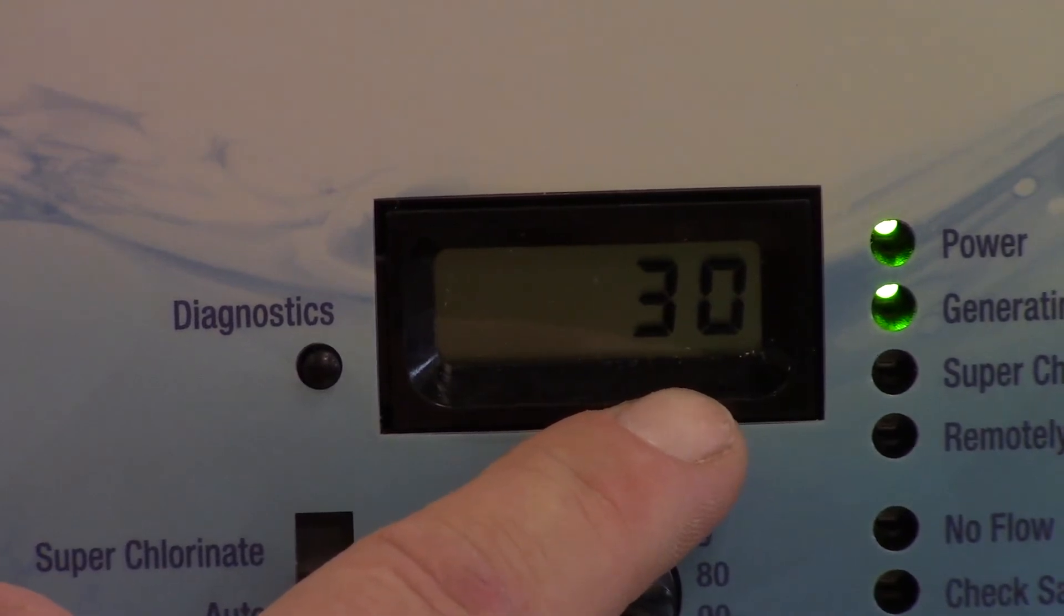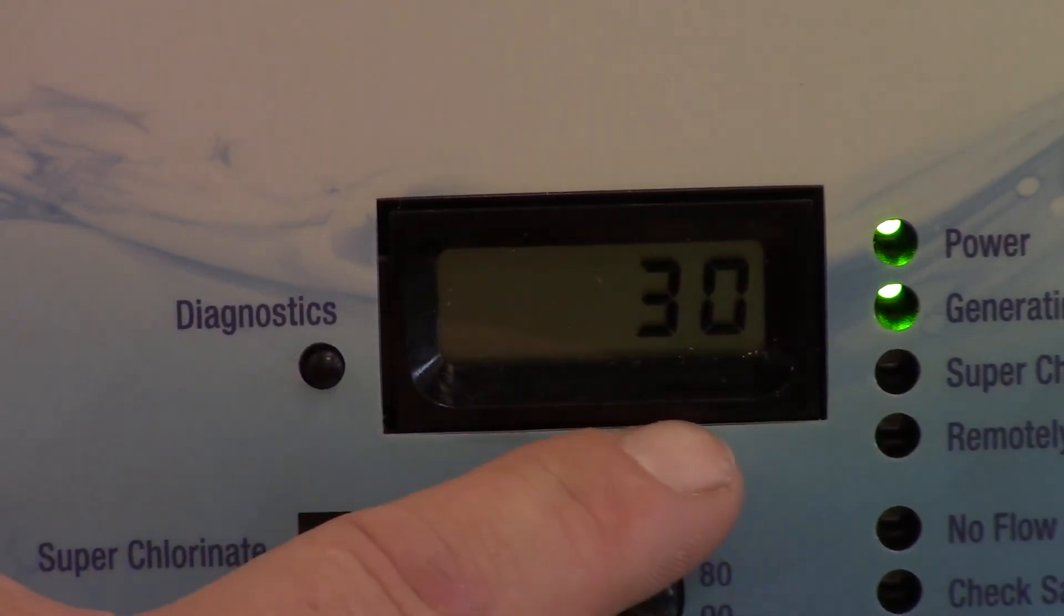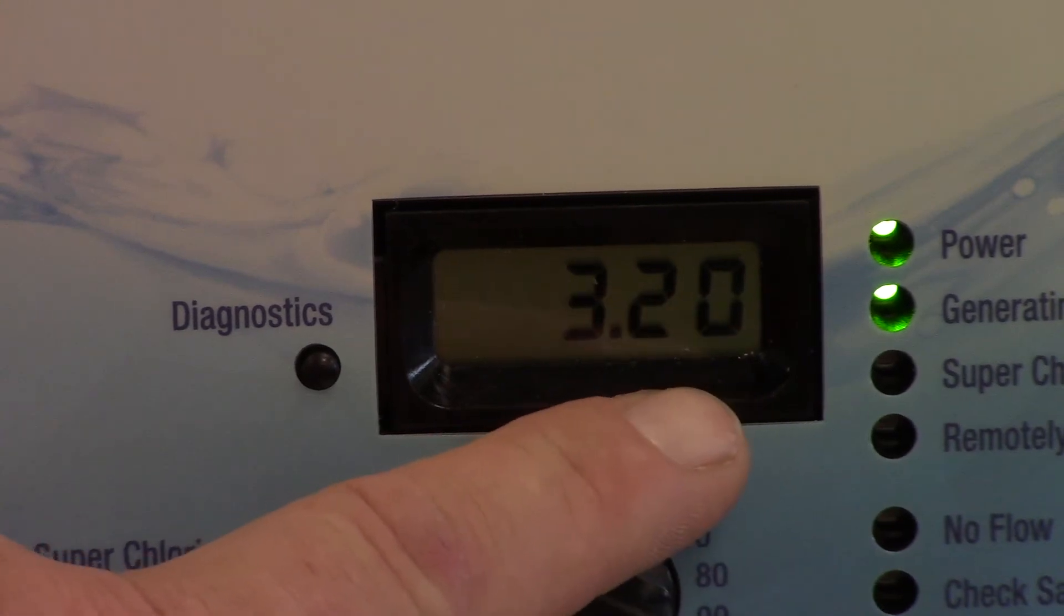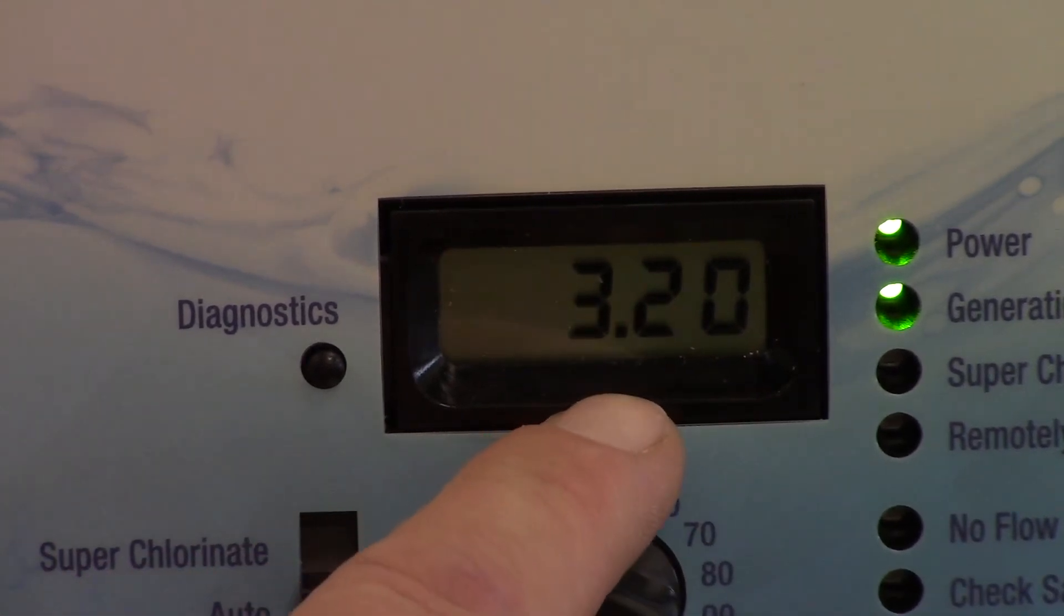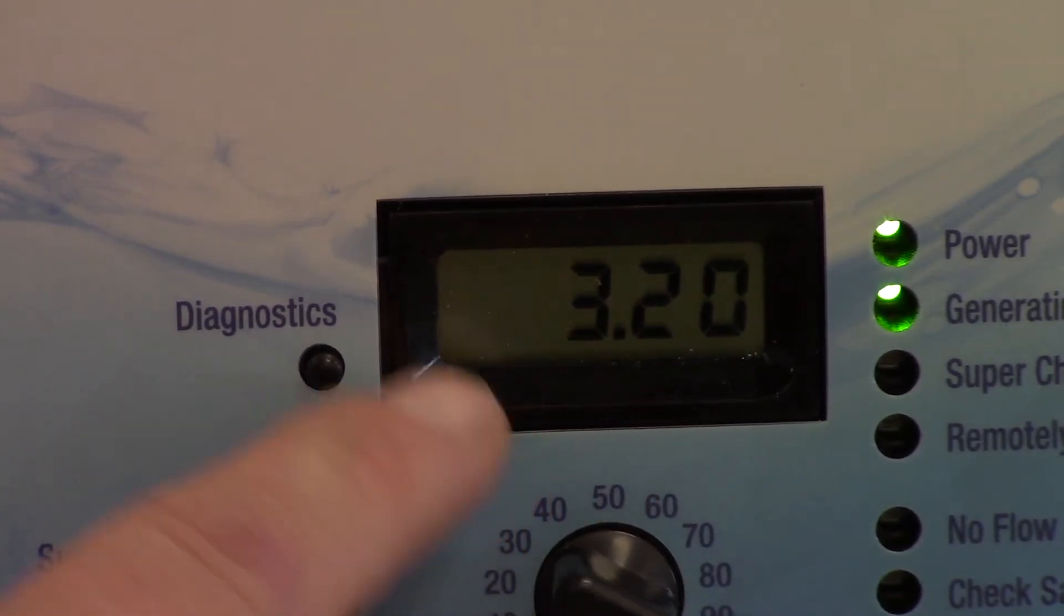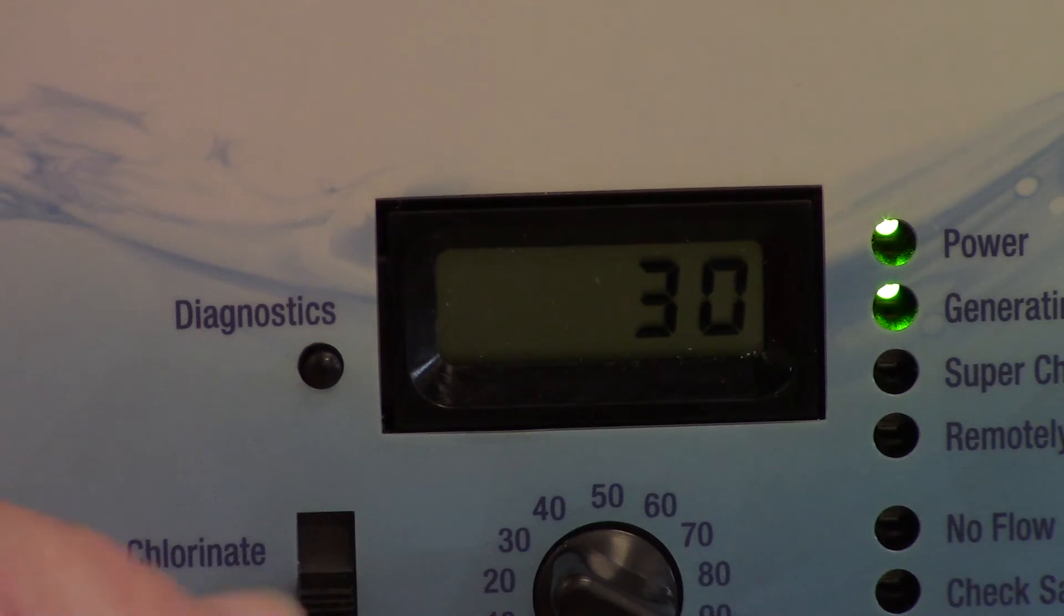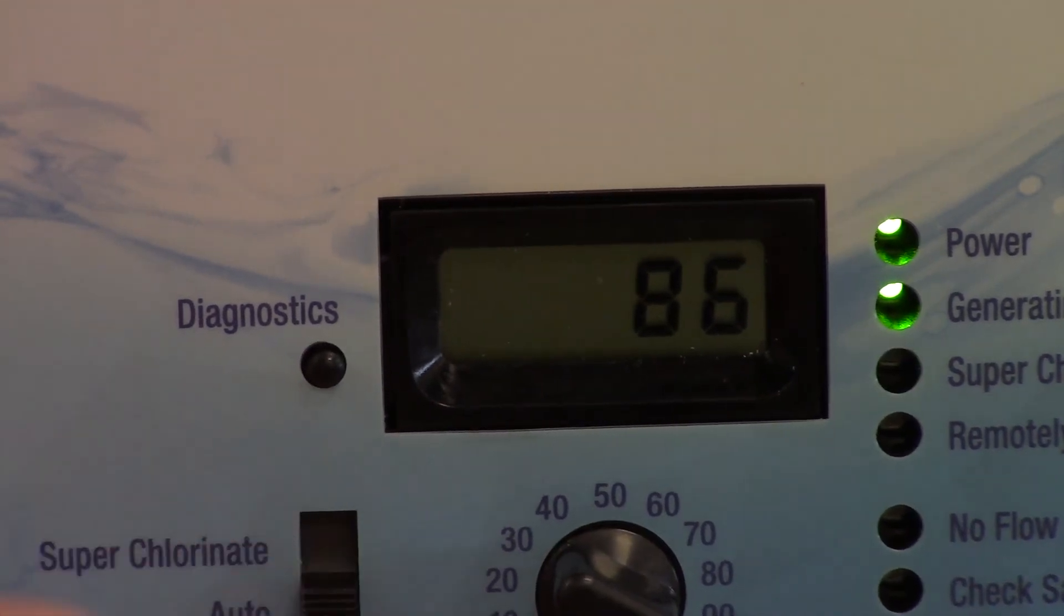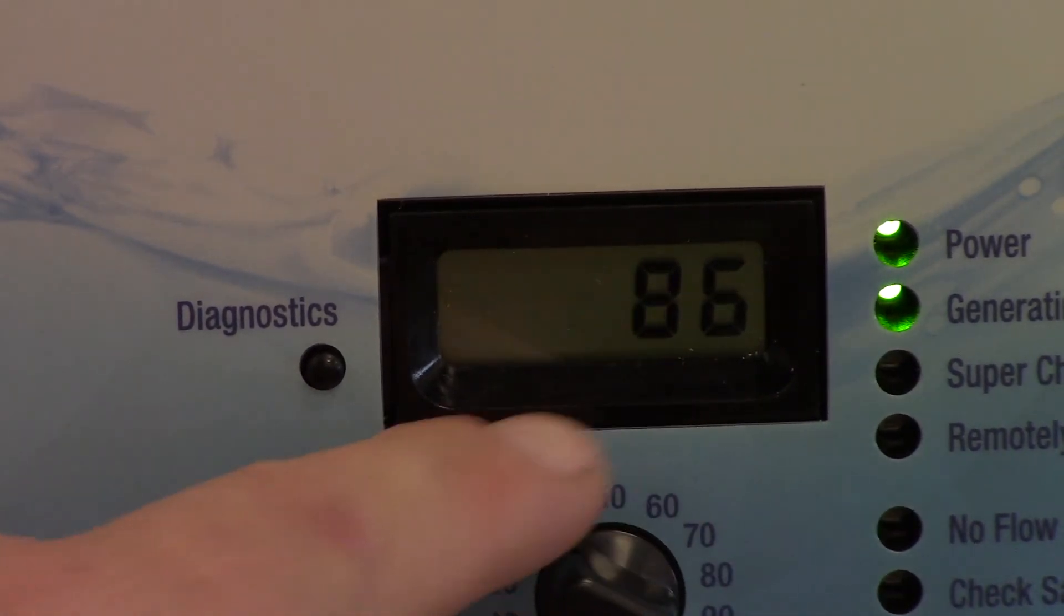Now keep in mind everything is going to switch over to metric not just the temperature. So there's our metric reading for our average salt which is 3.2 milligrams per liter. I don't want that so I'm going to come back over here again up to super chlorinate and back and it goes back into Fahrenheit for me.